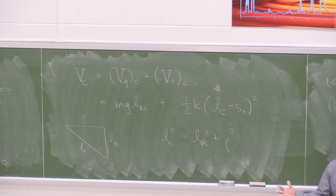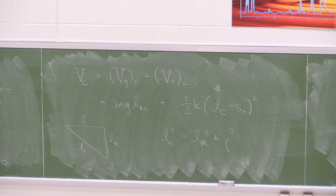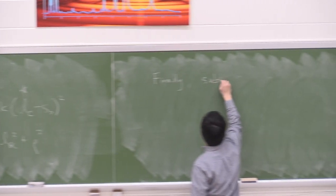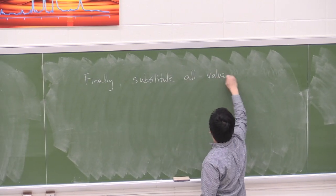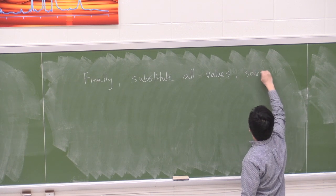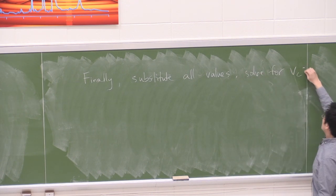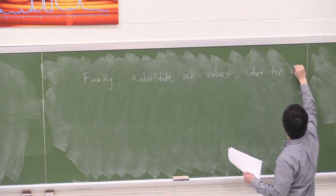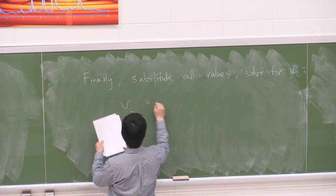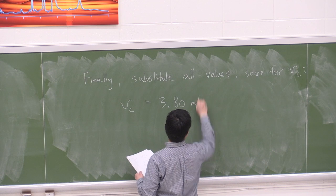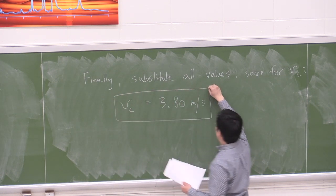Plugging LC in, the only unknown is VC. So we substitute everything, solve for VC, and that gives us the velocity at C.